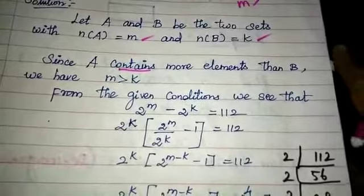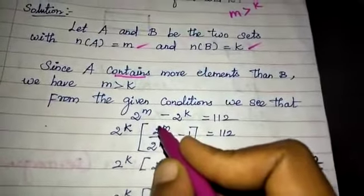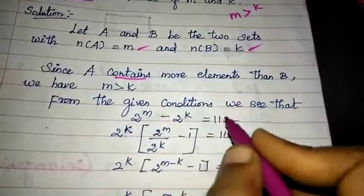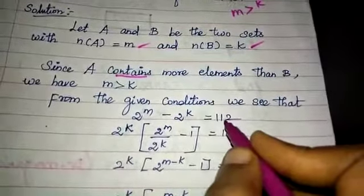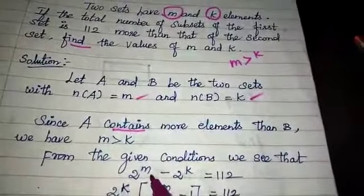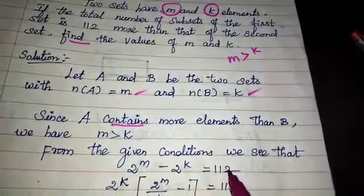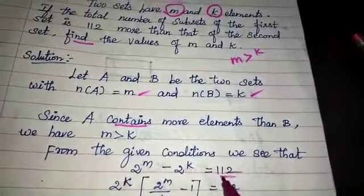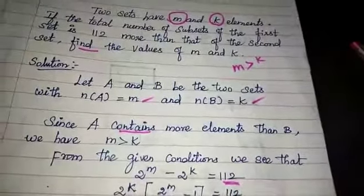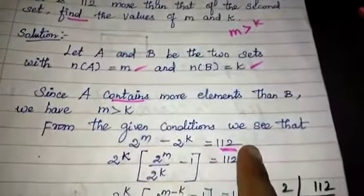From the given conditions we get: 2^M minus 2^K equal to 112.